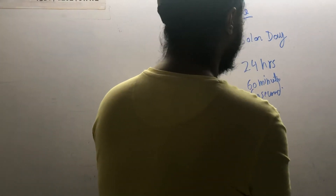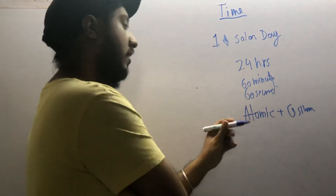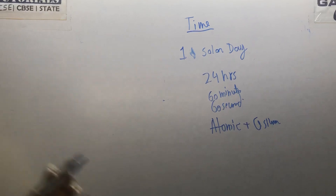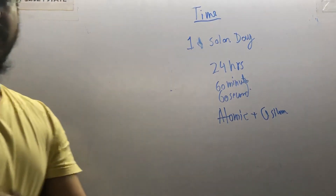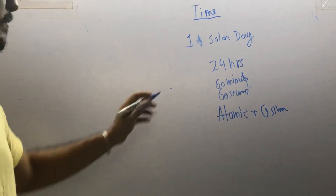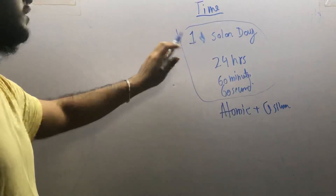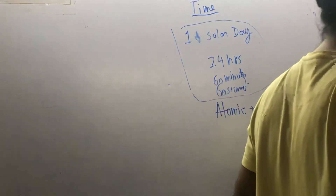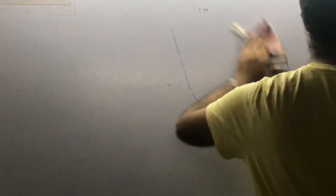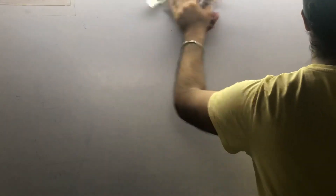So nowadays, an atomic clock using cesium is used to measure time accurately. The solar day concept is still important to understand, but the atomic clock with cesium is the current standard for precise time measurement.